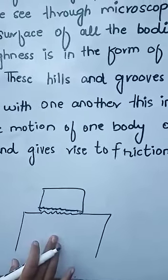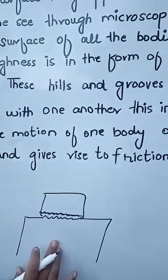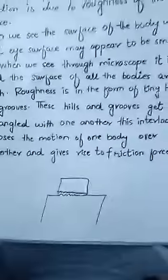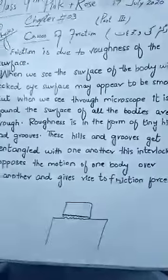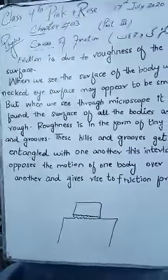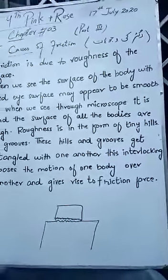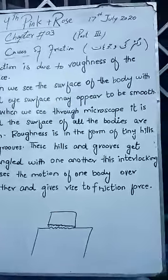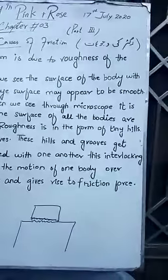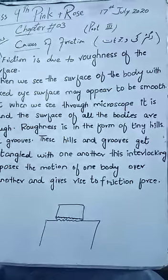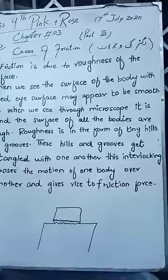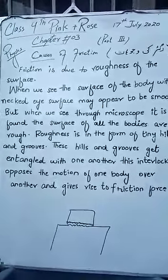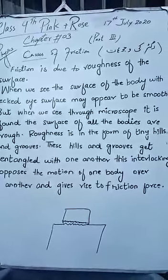When we apply pressure, friction appears. So when we pull it, there is pressure on the surface. The main cause is the surface — it is not smooth. So this is the cause of friction.